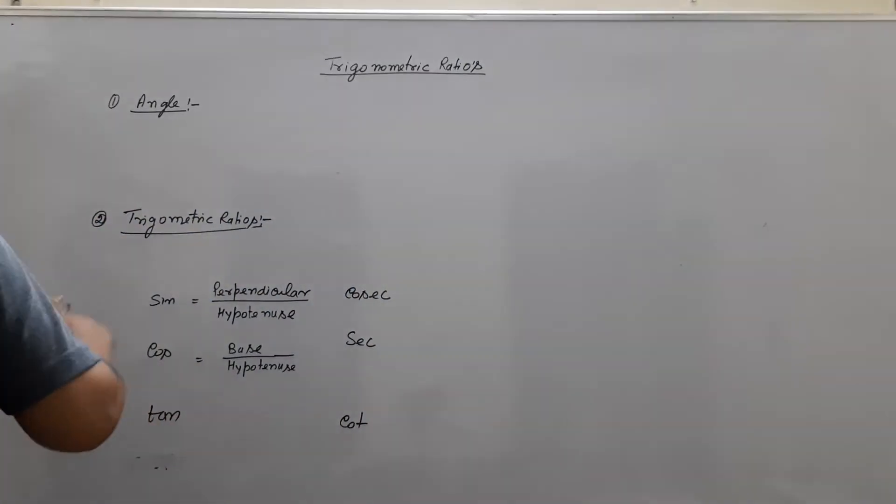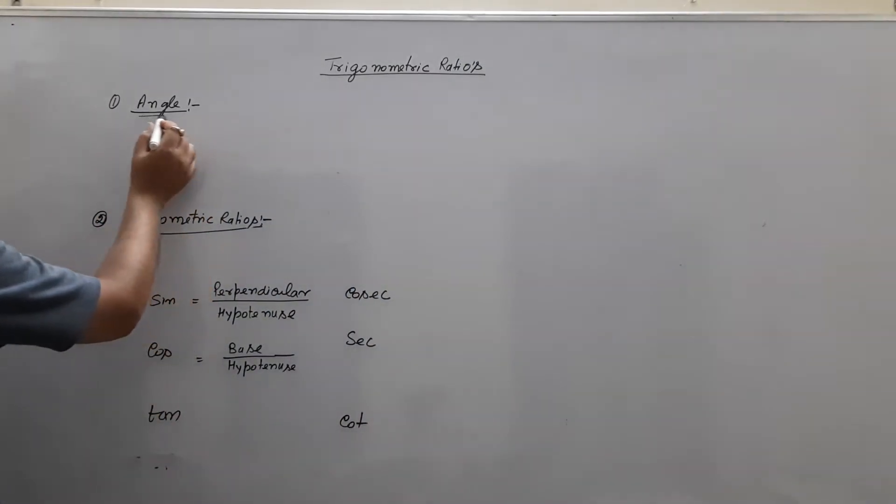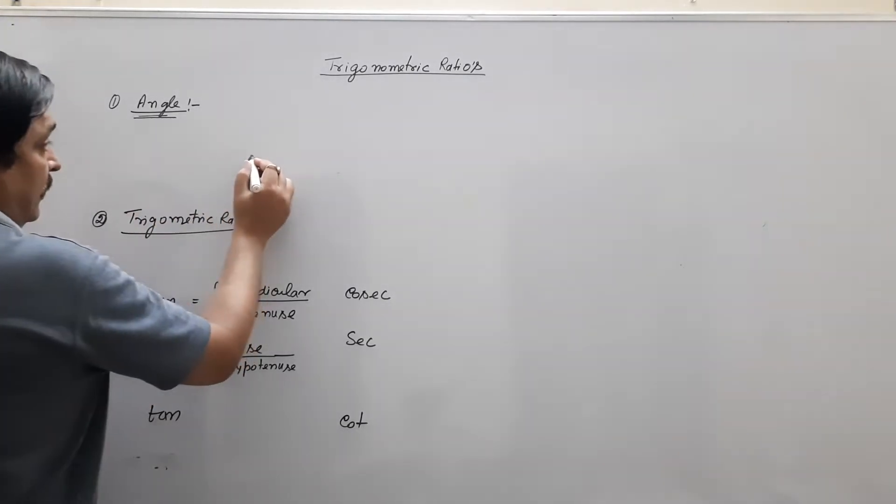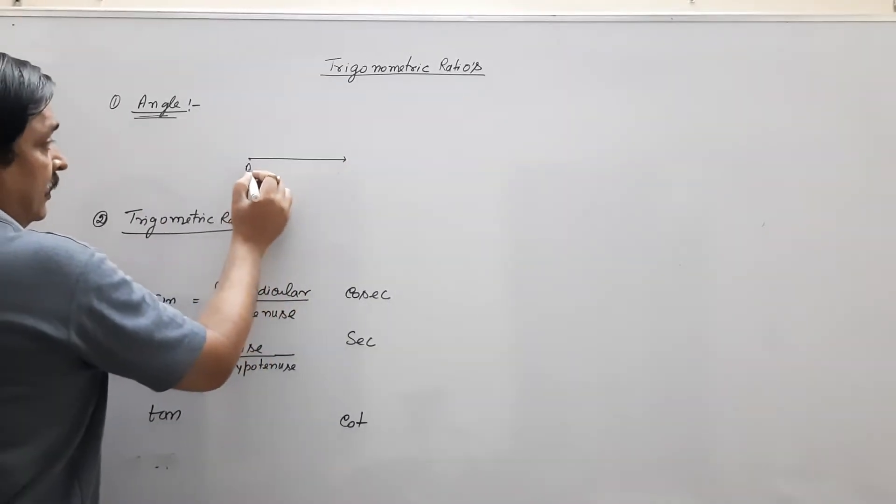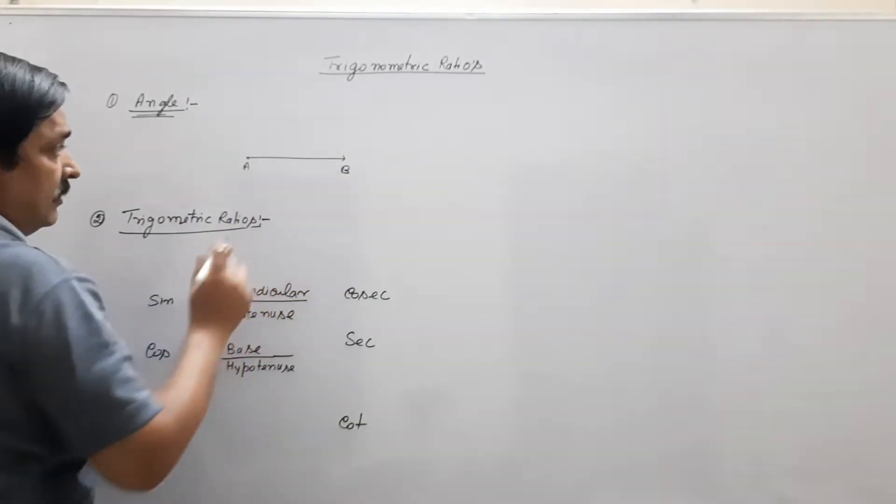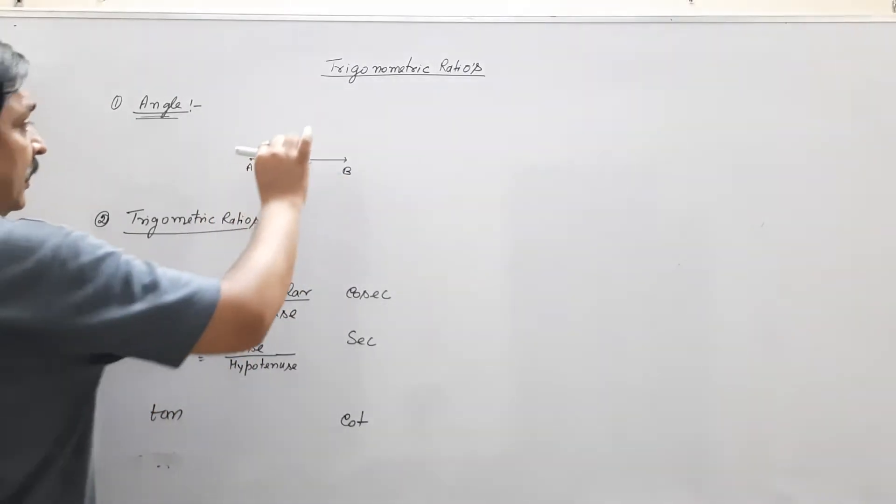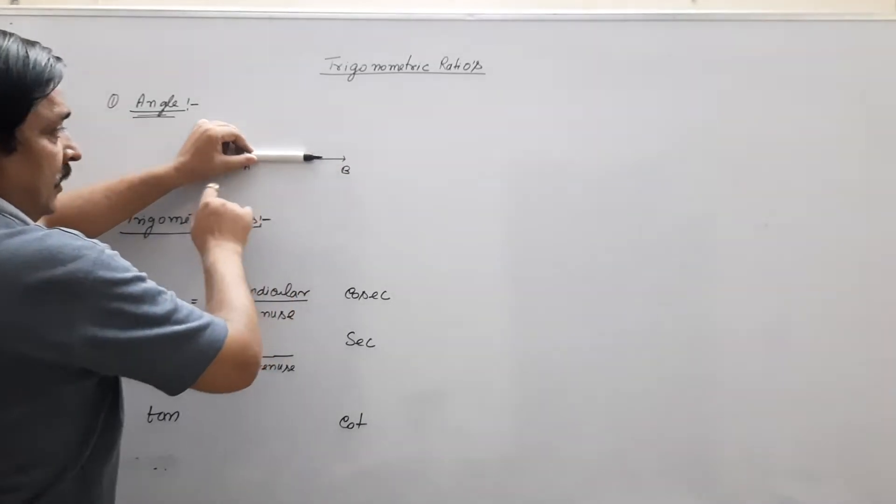Before that, we have angle. What is angle? Suppose this is the initial line A and B, and other line, suppose AC.